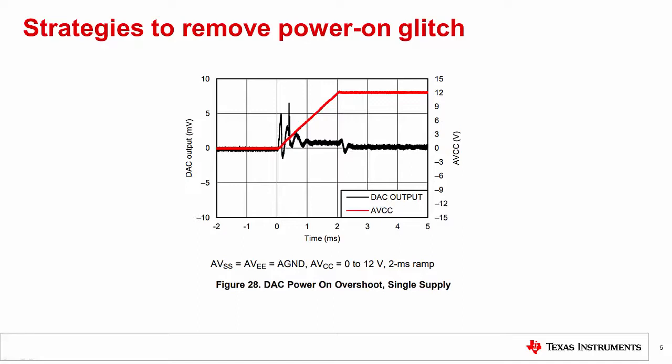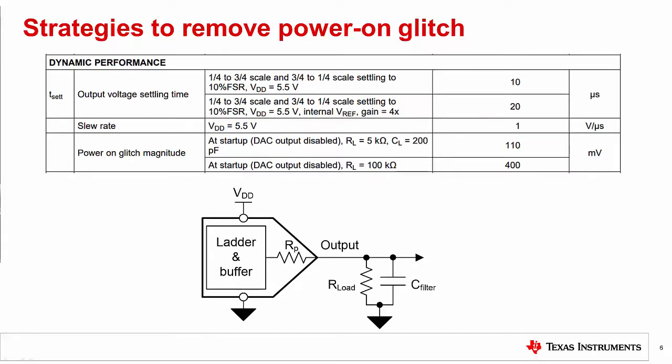In applications where almost no glitch can be tolerated, a device could be selected that has almost none. For example, here is the power-on-glitch of the AMC7836. It can be seen that this device has less than 10 millivolts of glitch. Power-on-glitch is usually specified on precision DACs, and can be found in the electrical characteristics table in their product datasheet.